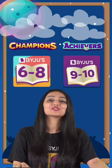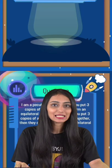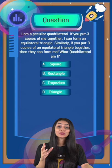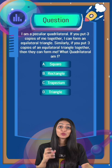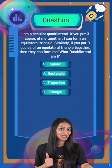Hey students, today I have come up with another interesting question. So it's basically a riddle. Let's see if you can guess the answer. So I am a peculiar quadrilateral. If you put three copies of the quadrilateral together, I can form an equilateral triangle. Similarly, if you put three equilateral triangles together, then they can form me. So what quadrilateral am I?